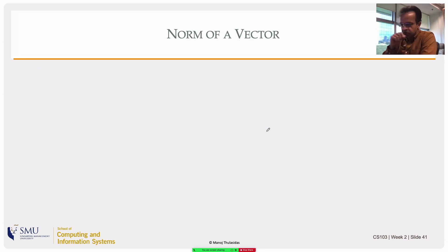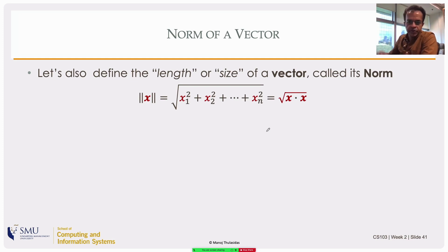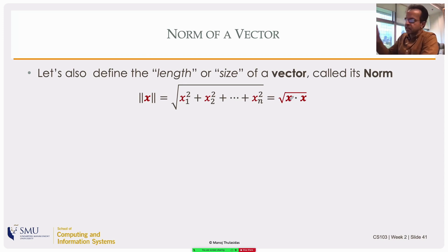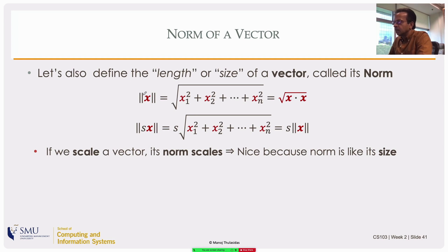Using the definition of a dot product, let's define one more thing: the norm of a vector. The norm has the symbol of double bars on either side. The norm of x is defined as the sum of the squares of the elements of x, and then you take the square root of that. If you take the dot product of a vector with itself, you get each element multiplying itself and summing up, so the norm is the square root of the dot product of a vector with itself.